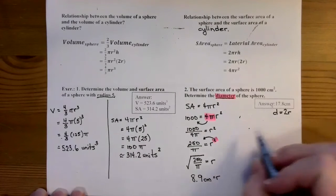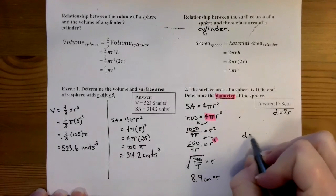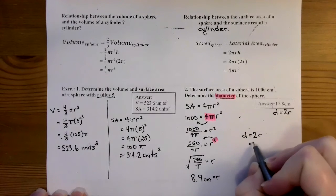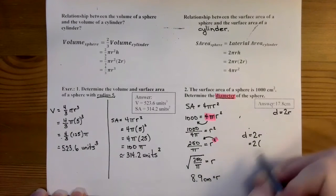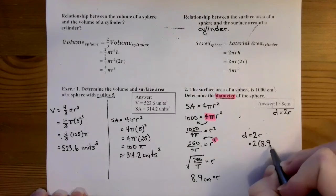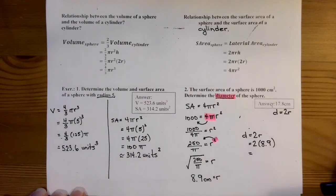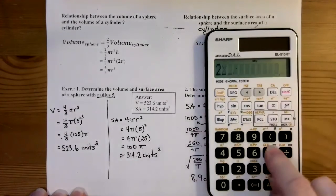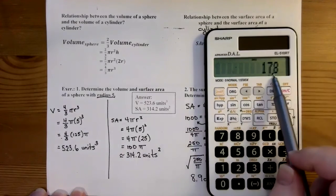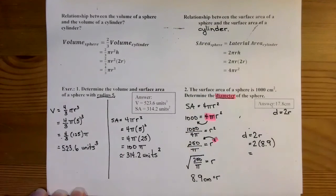So we're going to use our formula here. We know that our diameter is equal to double the radius. And in this case, we know the radius is 8.9. And so 2 times 8.9 is 17.8 centimeters.